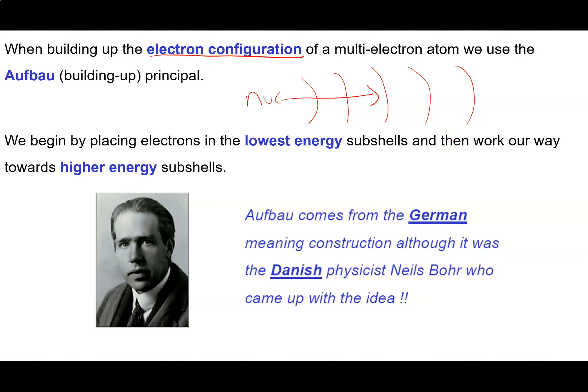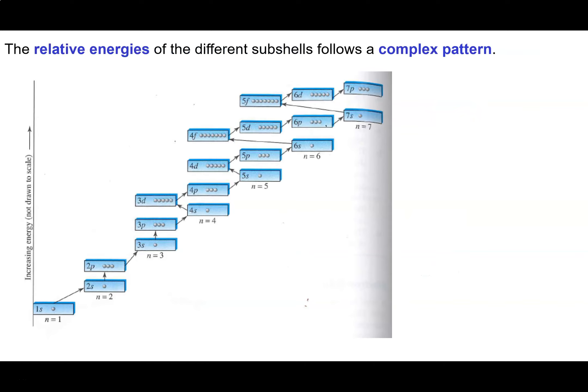Think of the shells as being like layers of an onion — they're three-dimensional rather than the circles of the Rutherford model. We need to know the relative energies of the different subshells in order to build up the electron configuration.